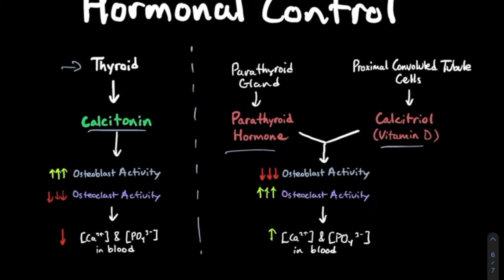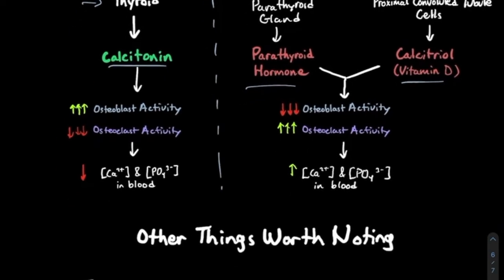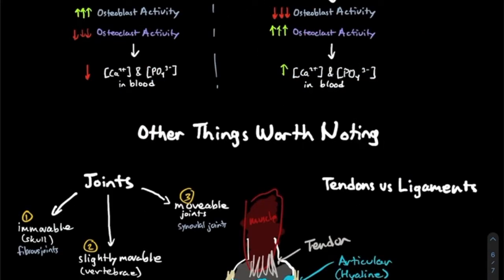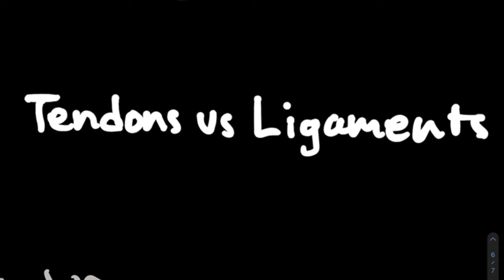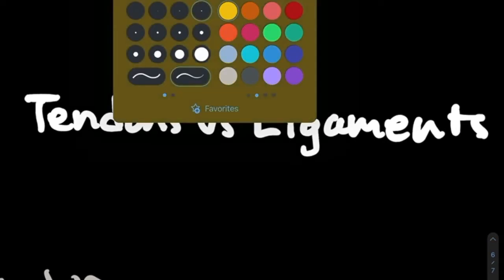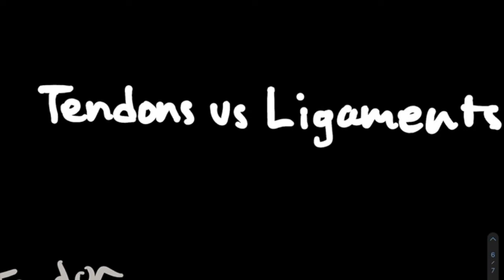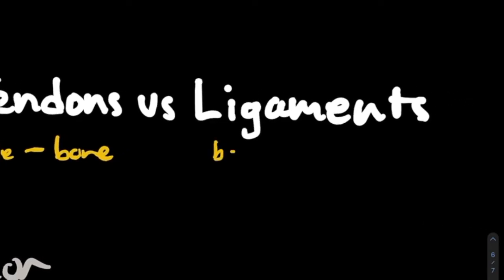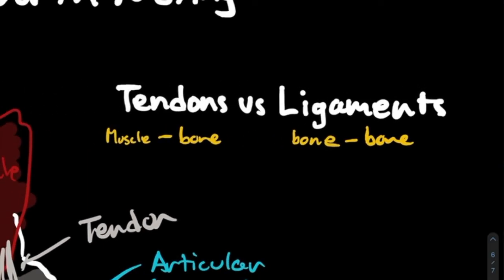One last topic: joints and tendons versus ligaments. Tendons connect muscle to bone — super easy to remember. Ligaments attach bone to bone. There are tons of examples all over the body, but that's the main distinction to know.